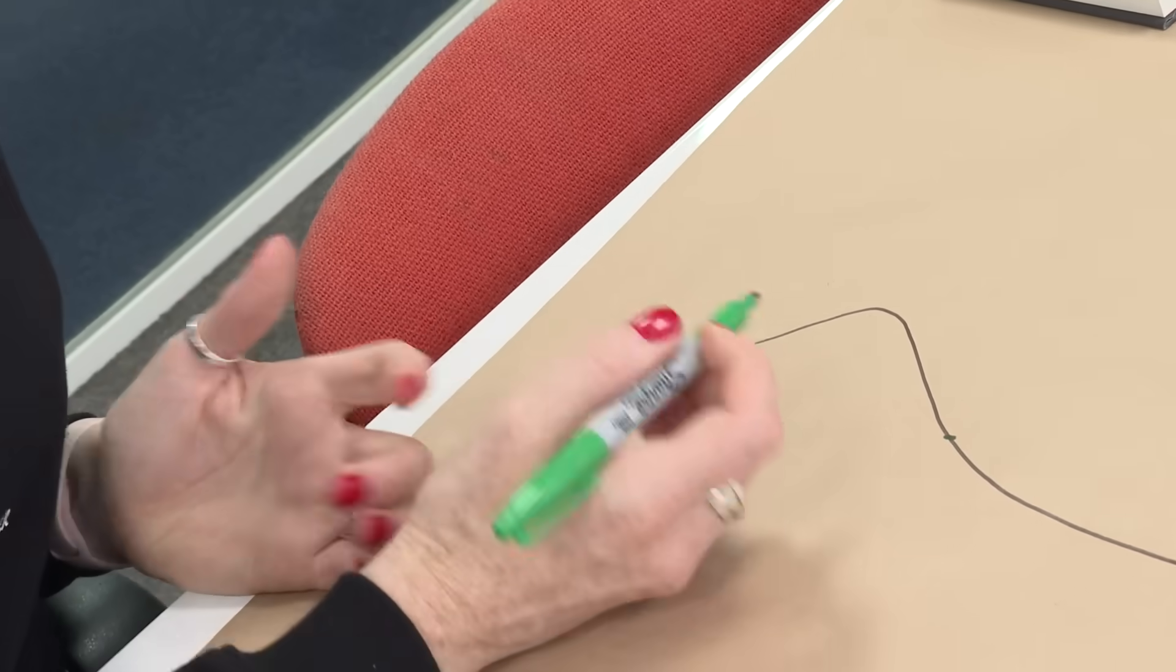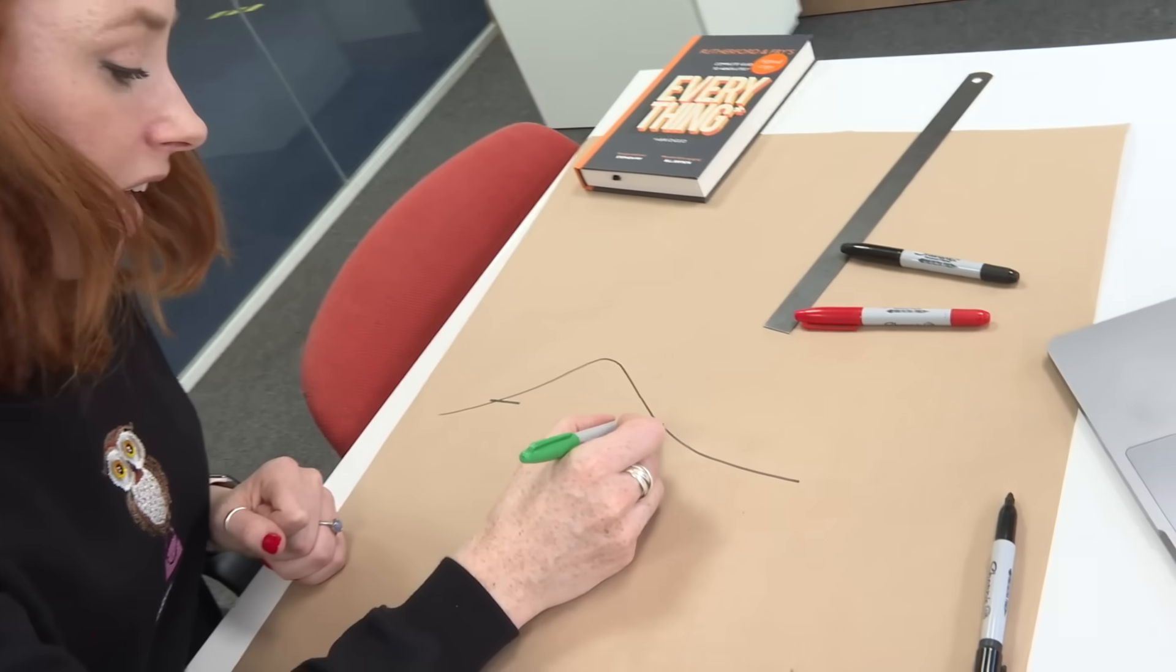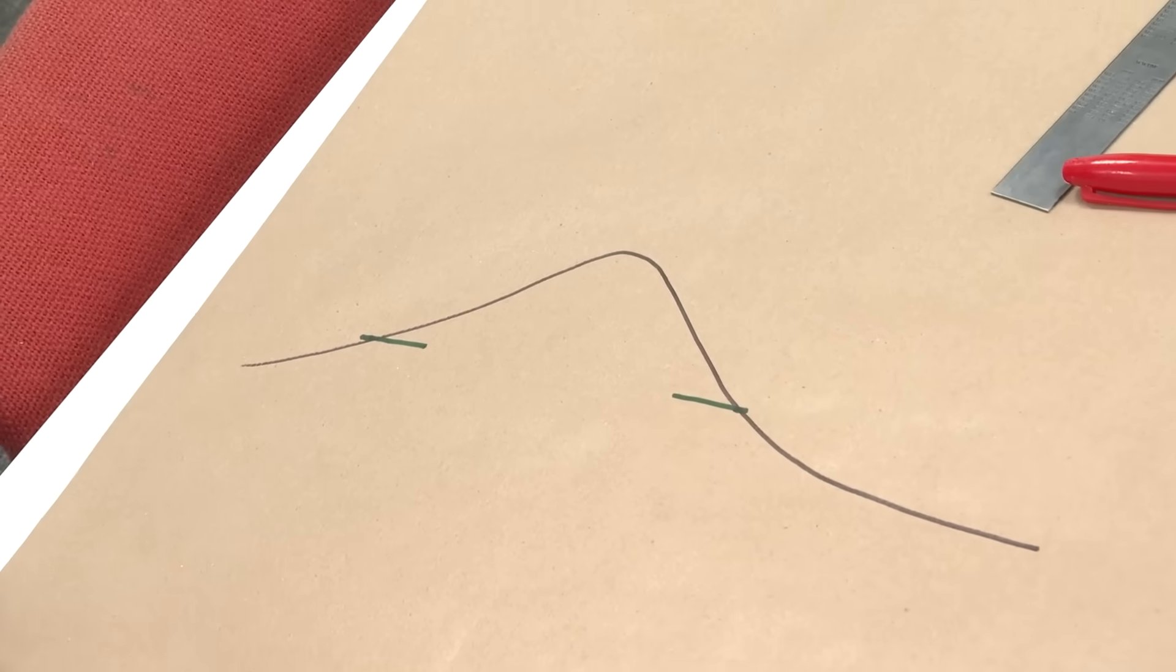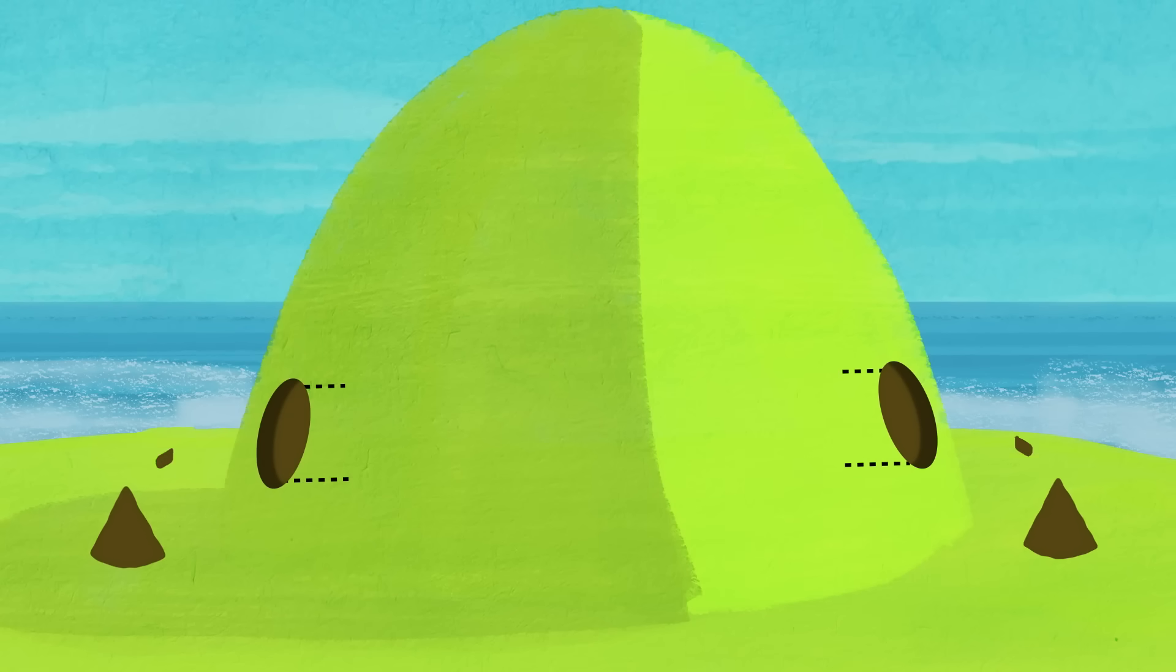So what people tend to do, this is what they do for the channel tunnel, for example, is you start digging here and you start digging here and you just hope that they line up. Except that, I mean, you're unlikely to find each other in the middle of a mountain. So you need a technique to make sure that these two lines end up meeting up in the middle. And the way that you do that is by using triangles.